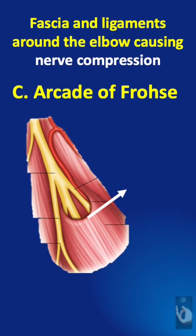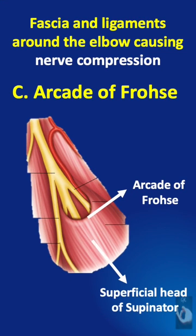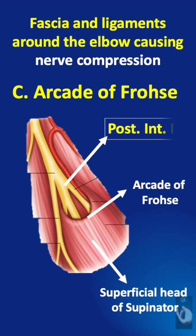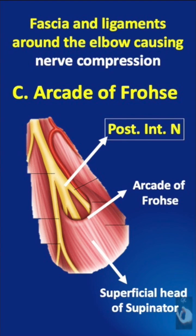The arcade of Frohse is formed by a fibrous band between the two heads of the supinator muscle. The deep branch of the radial nerve — that is, the posterior interosseous nerve — passes beneath the arcade, accompanied by vessels known as the leash of Henry.